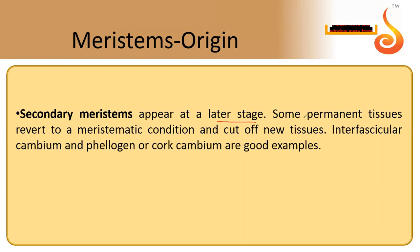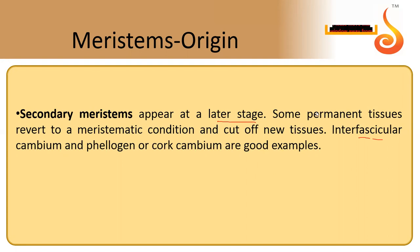Some permanent tissues revert to a meristematic condition and cut off new cells, giving rise to new tissues. Interfascicular cambium, phellogen or cork cambium are examples of secondary meristems. So based on origin, we classify meristems into three types: pro meristems, primary meristems, and secondary meristems. This is all about meristems.